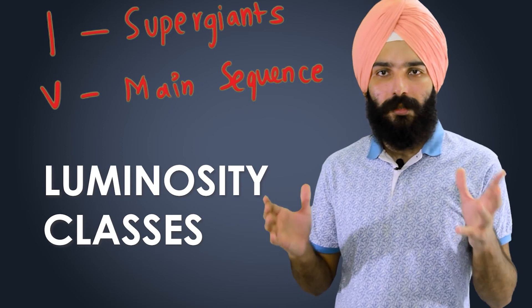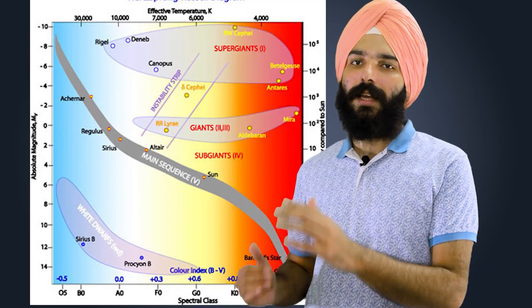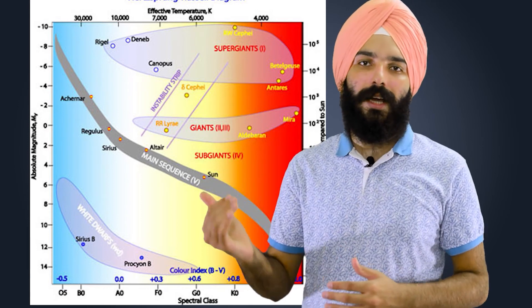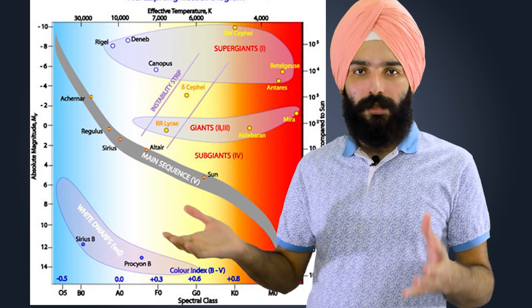So if you label this on the diagram, you'll have this line at number five for the main sequence stars. And as you go further up and up in the diagram, this would be where the first, or the brightest super giant stars would be.